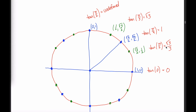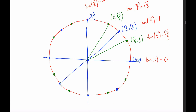This slope interpretation also helps you remember which value is √3 and which is √3/3, since many students confuse them. The line at π/3 has a much steeper slope than the line at π/6, so π/3 gives the larger value √3, and π/6 gives the smaller value √3/3. In the third quadrant, the line connecting the origin to 5π/4 is the same line as for π/4, so tangent of 5π/4 also equals 1 — both coordinates are negative, and a negative divided by a negative is positive.